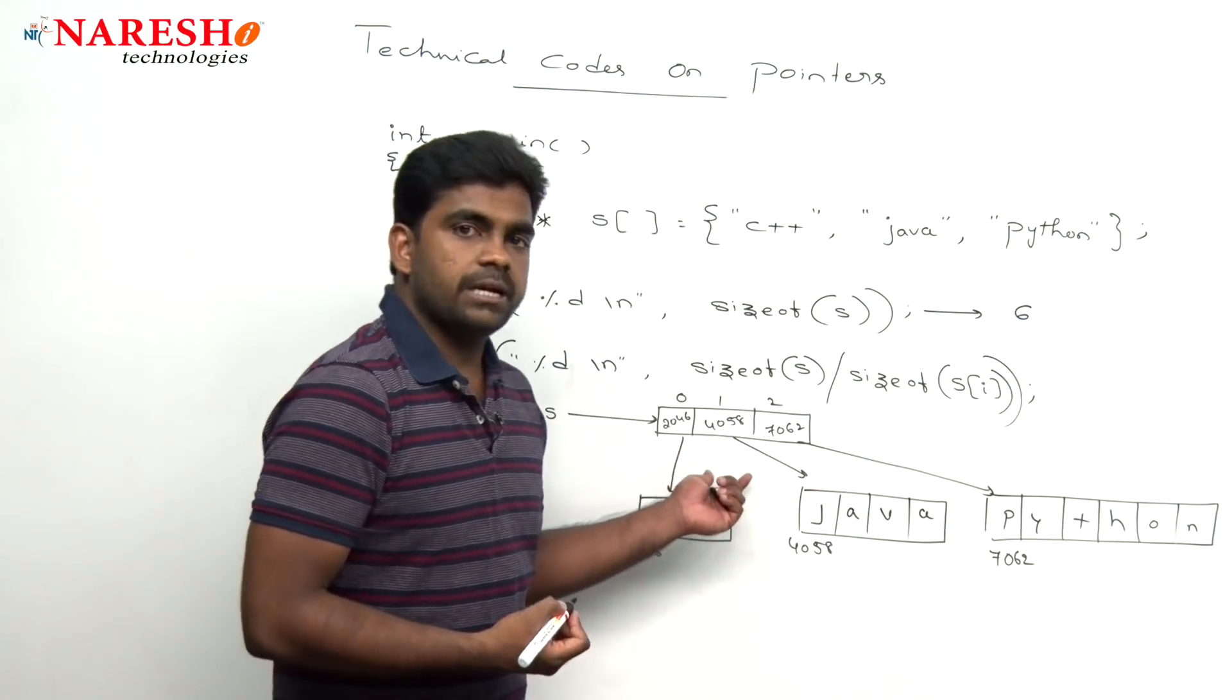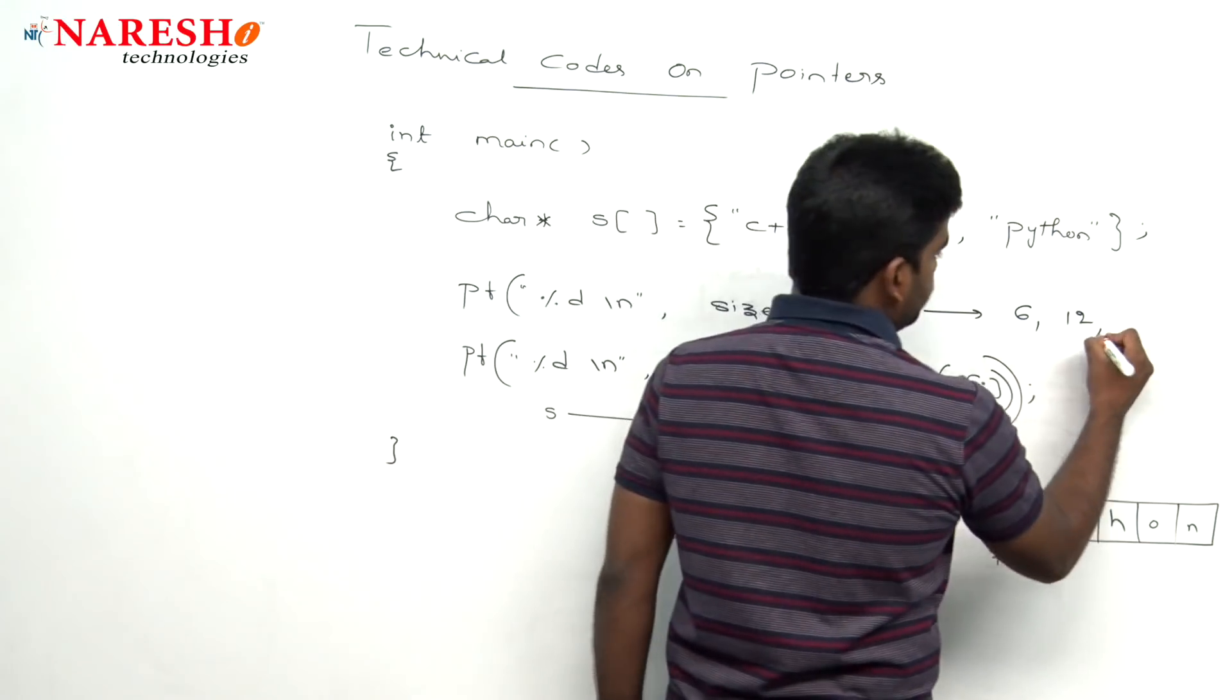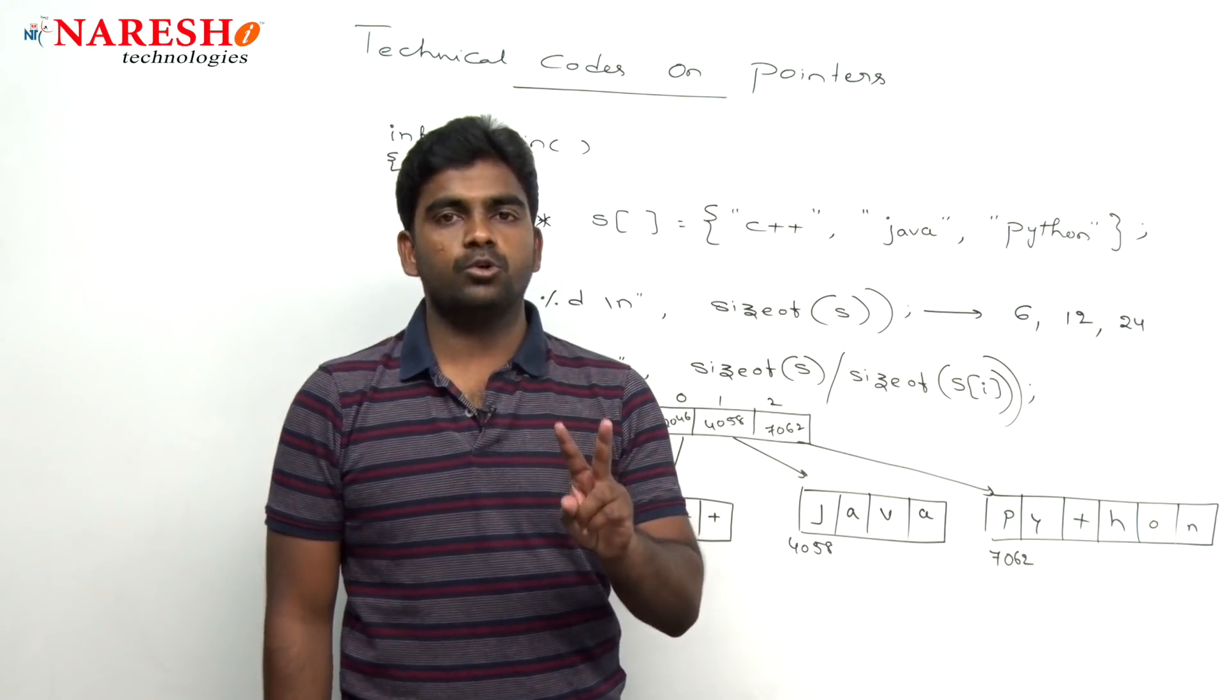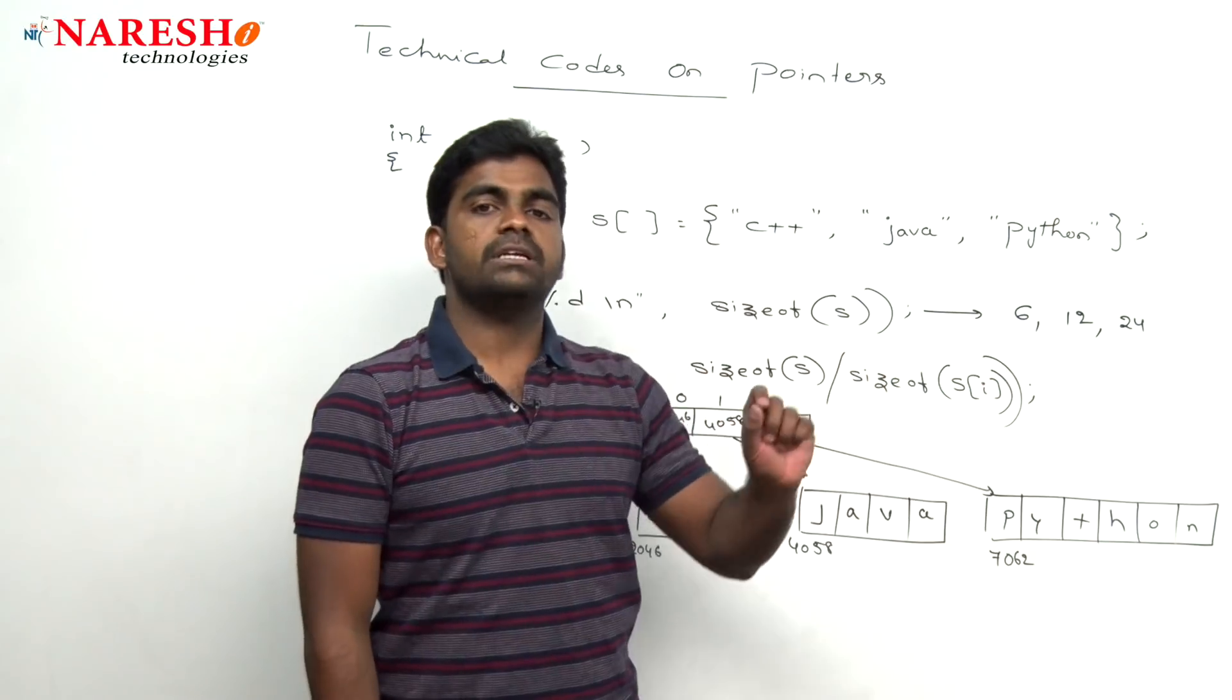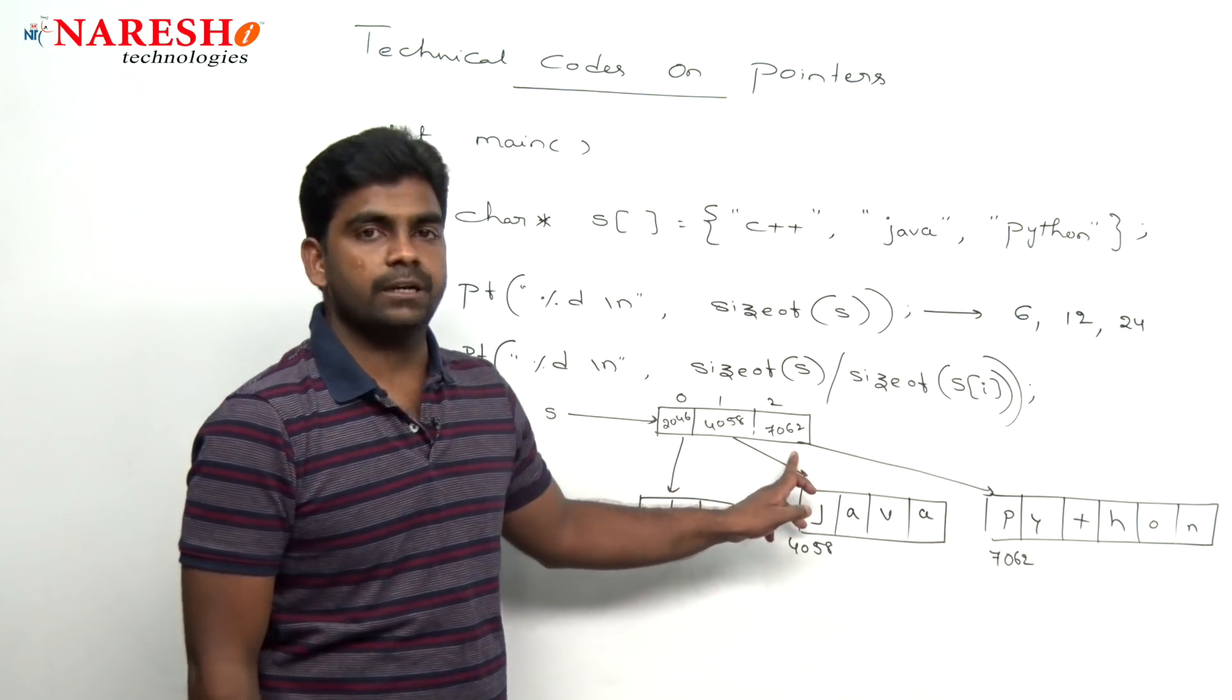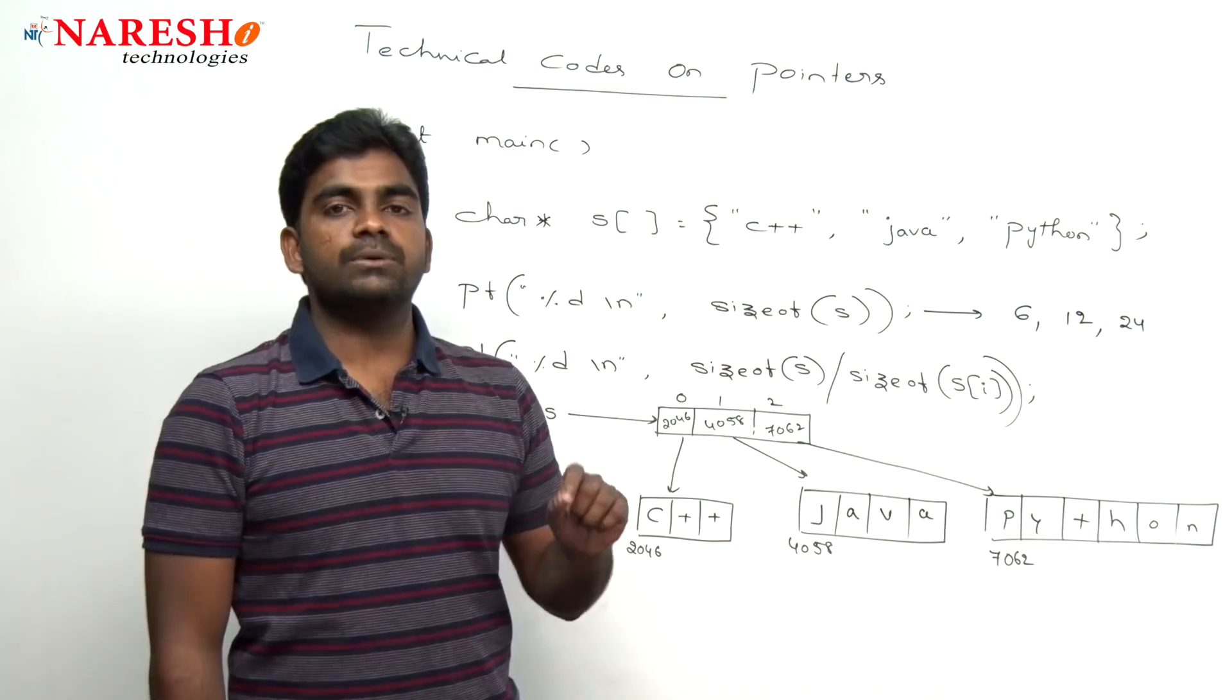Suppose if it is a 32 bit, 12 is the output. Suppose if it is a 64 bit, 24 is the output. Because if it is a 16 bit compiler, the size of pointer is 2 bytes, 3 into 2 is 6. If it is 32 bit, 3 into 4 is 12. If it is 64 bit, 8 bytes, 3 eights are 24. That is, it can be either 6 or 12 or 24. From compiler to compiler, it will change.